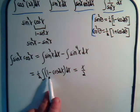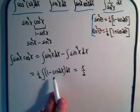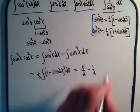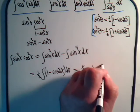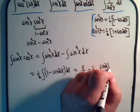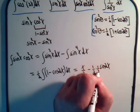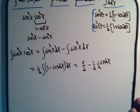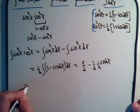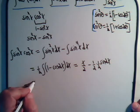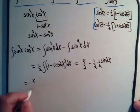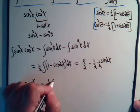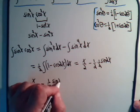We just take the integral of dx, and we have minus one-half. The integral of cosine of 2x is plus sine of 2x divided by two. So it looks like for the first integral, that gives us x over 2 minus one-fourth times the sine of 2x.